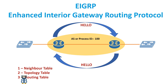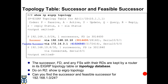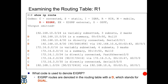EIGRP maintains three tables after forming adjacencies: the neighbor table, the topology table, and the routing table. When a router discovers a new neighbor, it records the IP address and interface detail in the neighbor table, which is similar to the adjacency database in link state protocols. The topology table contains all destination details received from neighbor routers, including successor and feasible successor details for each destination. The routing table contains the best route for each known network.